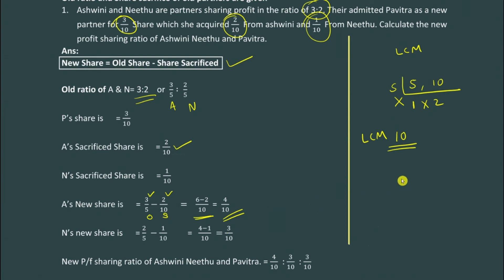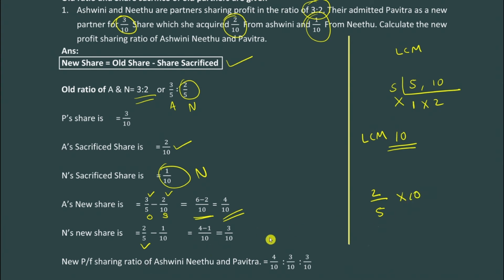For Nitu's new share: old share is 2/5 minus sacrificed share 1/10. LCM of 5 and 10 is 10. For 2/5: 10÷5 = 2, so 2×2 = 4. For 1/10: 10÷10 = 1, so 1×1 = 1. Subtract 4 minus 1 = 3. So Nitu's new share is 3/10.